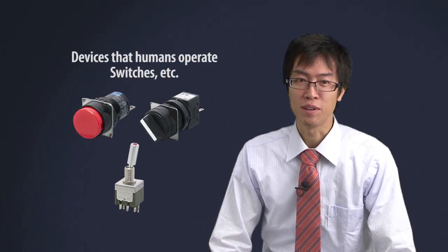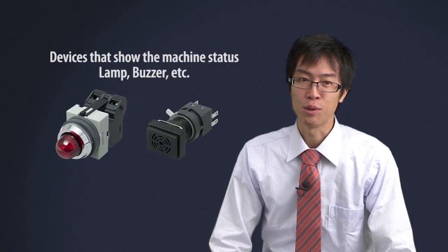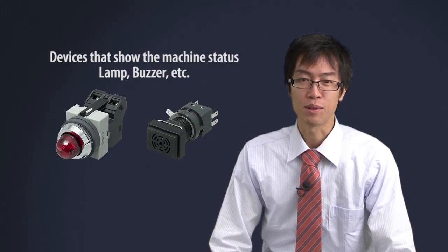Sequence control requires devices that humans operate, like switches. Devices that show the machine status, like lamps and buzzers.